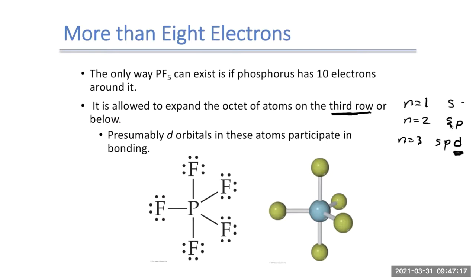s orbitals hold two electrons max; s and p hold eight electrons max. But s, p, and d together can technically hold 18 electrons — ten in the d, six in the p, two in the s. Since we have d orbitals available in row three and beyond, we can expand the octet and add more electrons. That's how phosphorus pentafluoride can exist — by putting electrons into the d orbital.